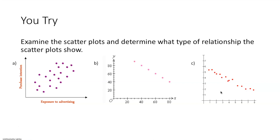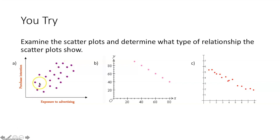Your turn! For the first scatter plot, are the points going up and to the right or down and to the right? It looks like they're going up and to the right, so it's a positive correlation. Is it perfect, strong, or weak? They're not a straight line, so not perfect. They're kind of scattered out, so this is a weak positive correlation.